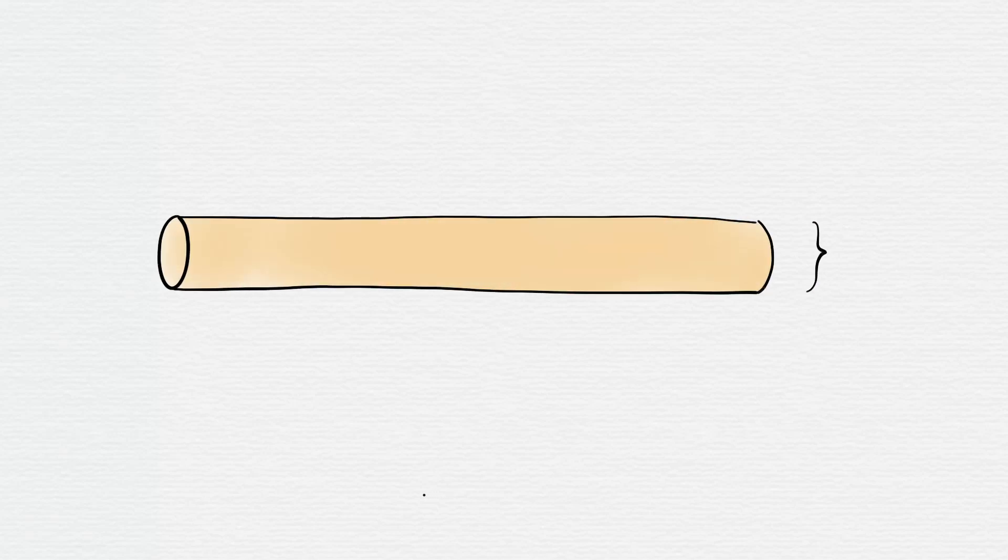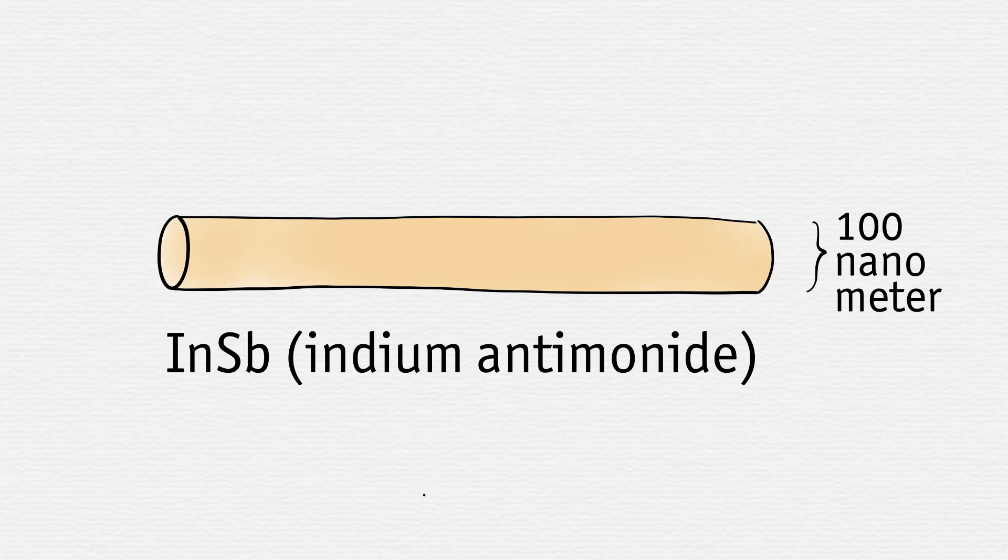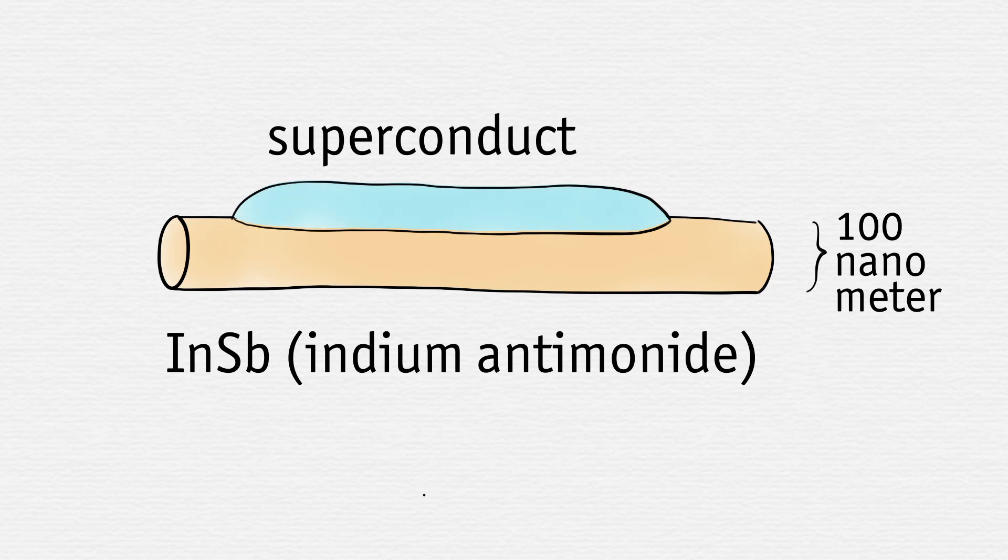How do you create Majorana quasi-particles? Start out with ultra-thin nanowires made out of indium antimonide, a semiconductor. Then have the nanowires border on a superconductor, a material that has zero electrical resistance. Add a magnetic field.